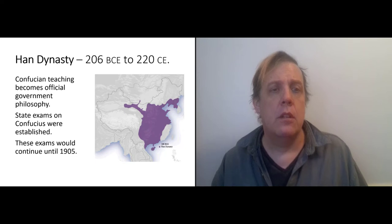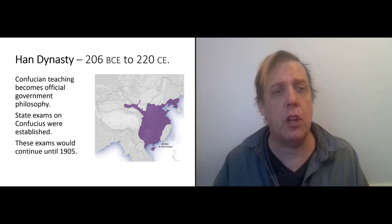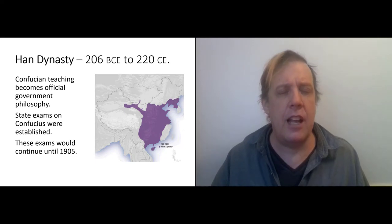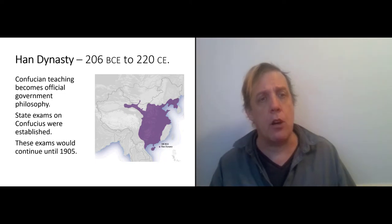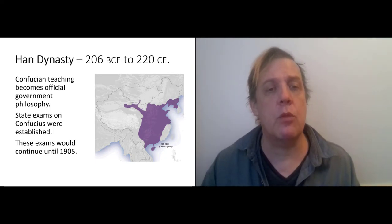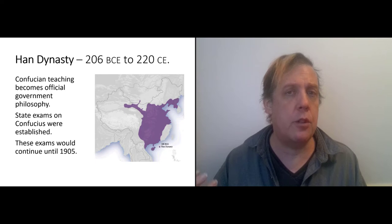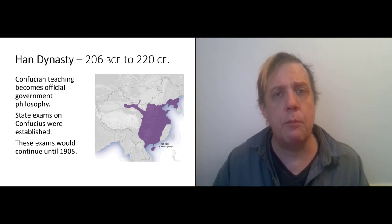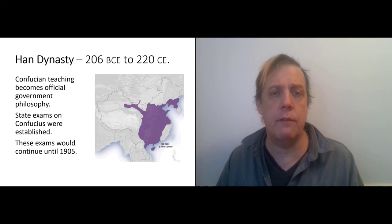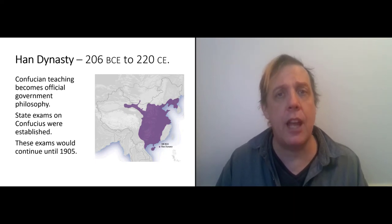It was followed by the Han dynasty. Under the Han dynasty, the Confucian teaching became the official government philosophy. And the Confucian teaching absorbed a lot of legalism. It kind of had to in order to actually properly run the empire. State exams were established based on Confucian teaching. So if you wanted to move up in society, the way to do it was to get a job in the government with the emperor.